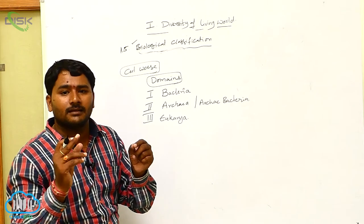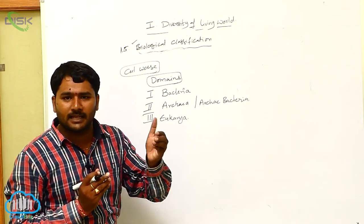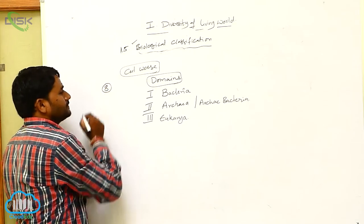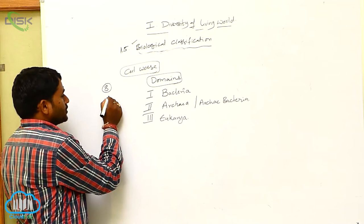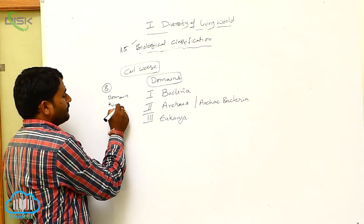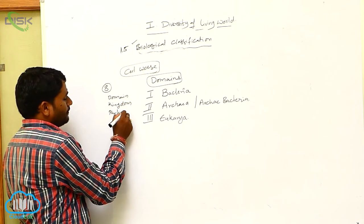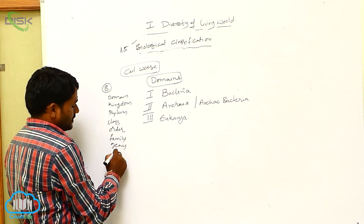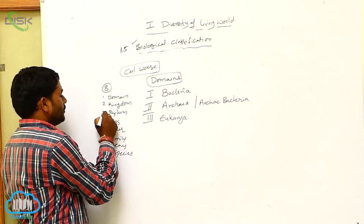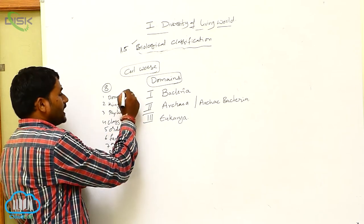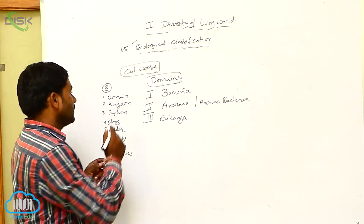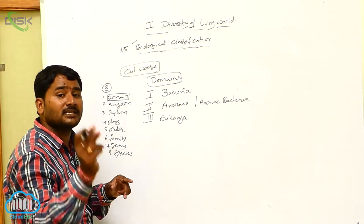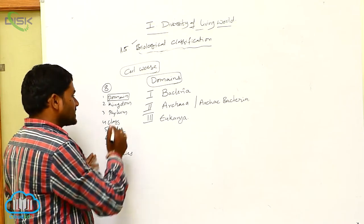Domain is bigger than the kingdom. If you consider domain as an obligatory category, the total obligatory taxonomic ranks are eight: Domain, Kingdom, Phylum, Class, Order, Family, Genus, and Species. So domain is the biggest obligatory rank. Otherwise, without domain, the normal obligatory ranks begin from Kingdom.